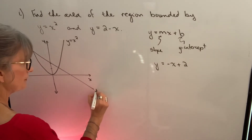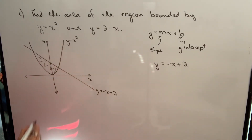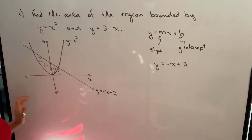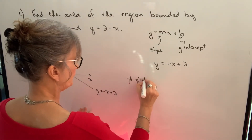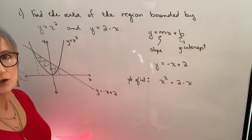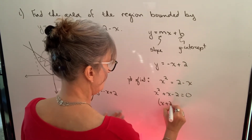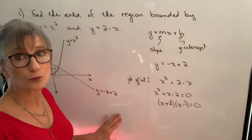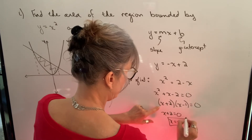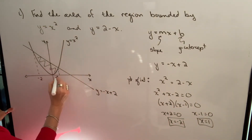So we've drawn our two functions and this is the region we want to find the area of. I need to find what a and b are, so I need to find those points of intersection. We let the two curves equal each other: x squared equals 2 minus x. Moving everything to one side gives a quadratic equal to zero. We factor: x plus 2 and x minus 1 are the factors. So x equals negative 2 and x equals 1 are the two points of intersection, meaning we integrate from negative 2 to 1.